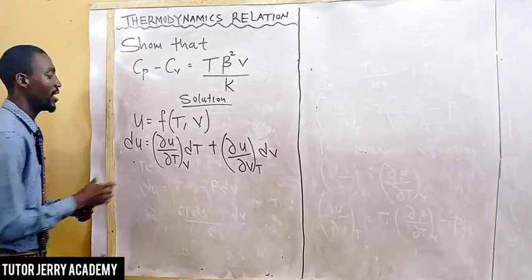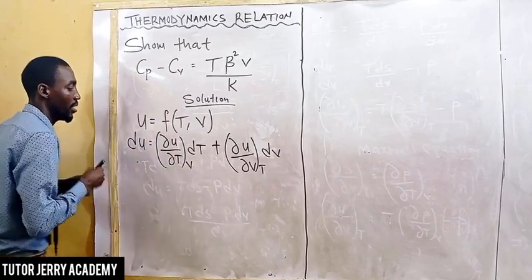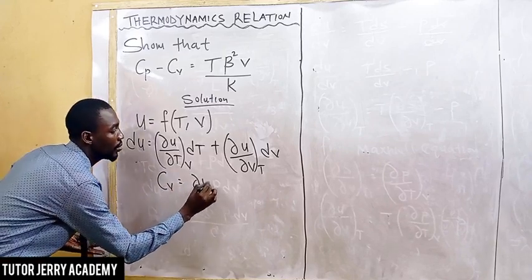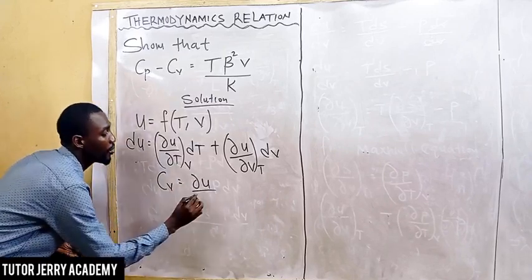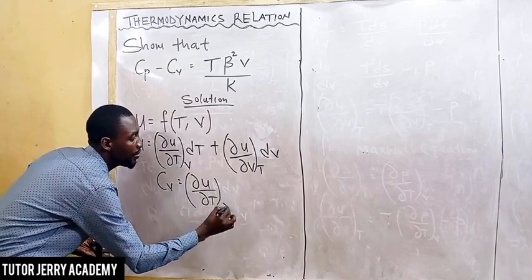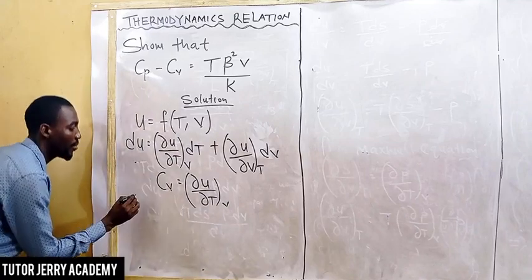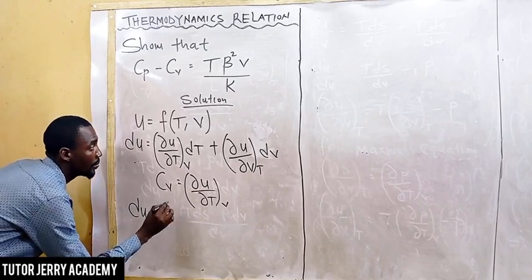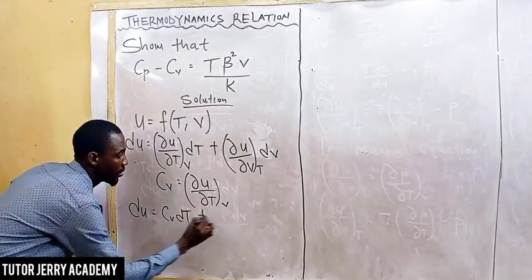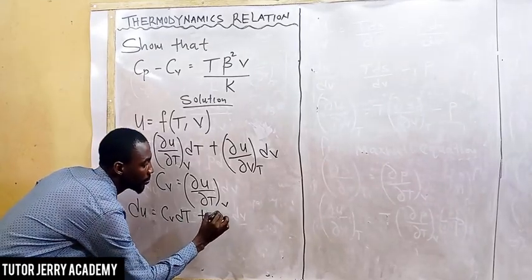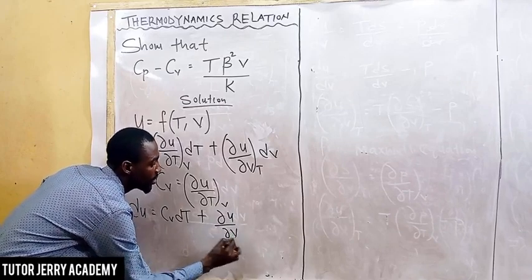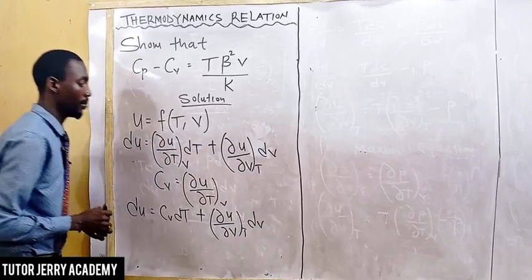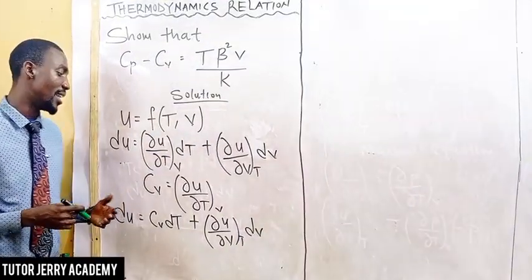Now we recall carefully that what is here — the partial derivative of u with respect to T keeping V constant — is nothing but Cv. We can therefore say du equals Cv dT plus the partial derivative of u with respect to V, keeping T constant, dV.